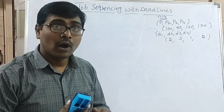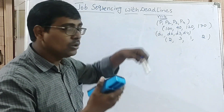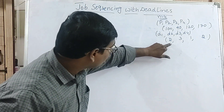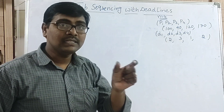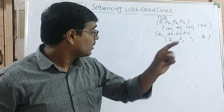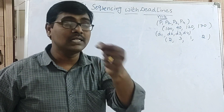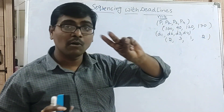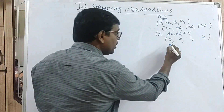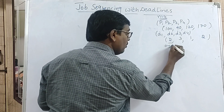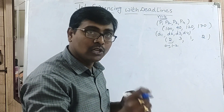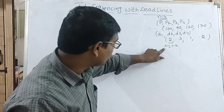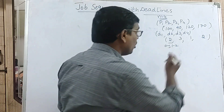Your aim is to execute as many jobs as possible within their deadline. Observe: deadline 2 means it has a maximum of 2 slots, deadline 3 means a maximum of 3 slots, deadline 1 means only one possible option. A job is executed in only one slot.